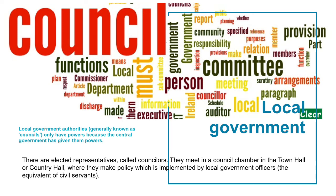Local councils traditionally manage nearly all public services, and taken together they employ three times as many people as the national government does. Local councils are allowed to collect one kind of tax, a tax based on property. All other kinds are collected by central government. It used to be called rates and was paid only by those who owned property, and its amount varied according to the size and location of the property.